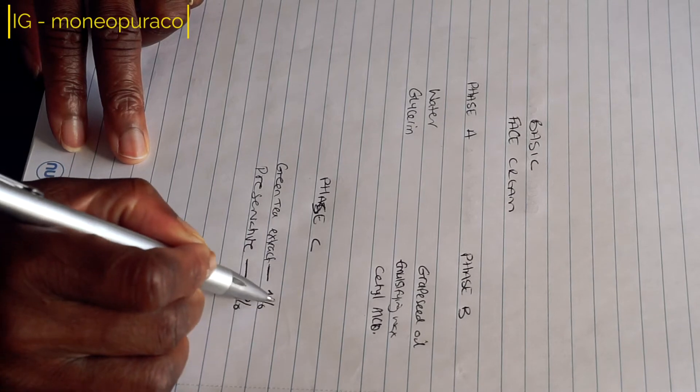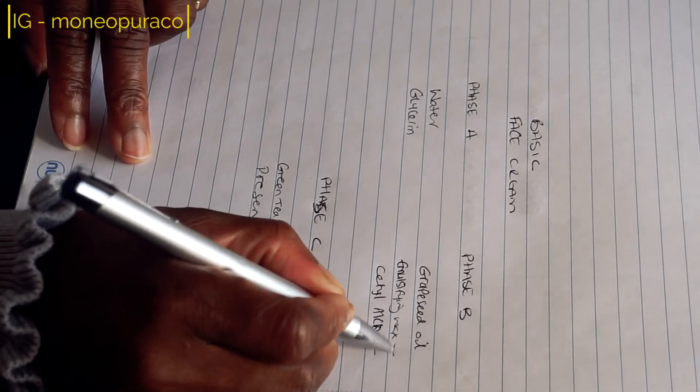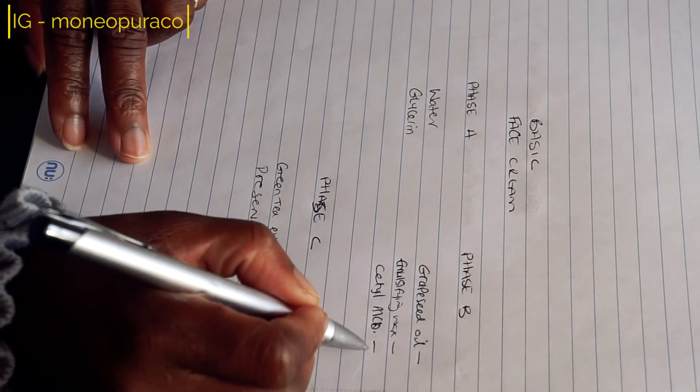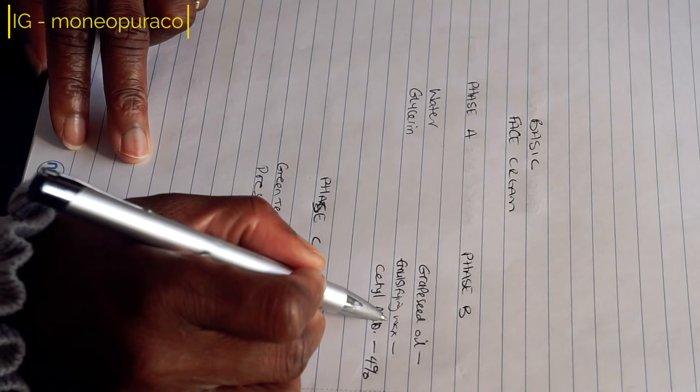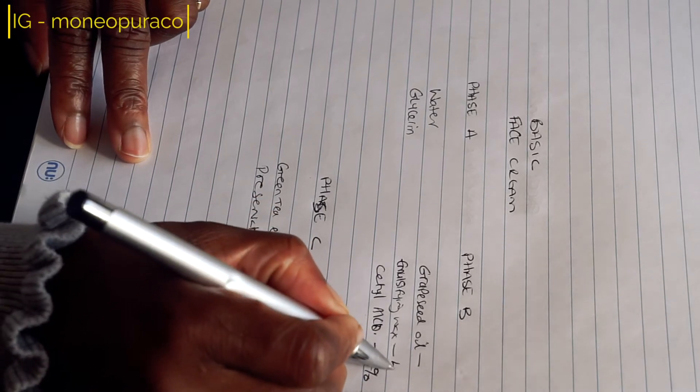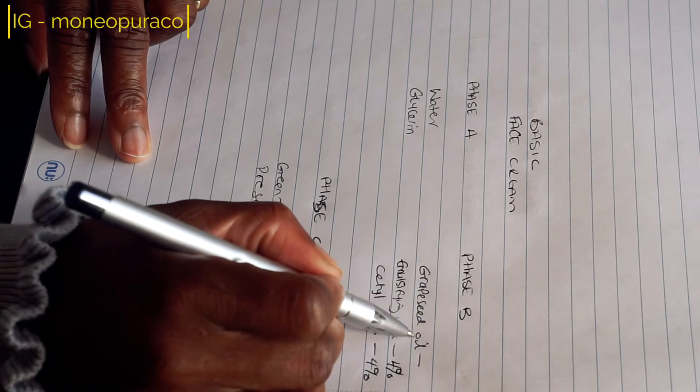For phase B, cetyl alcohol will be at 4%, and our emulsifying wax will also be at 4%. Our grapeseed oil we'll be using at 10%.